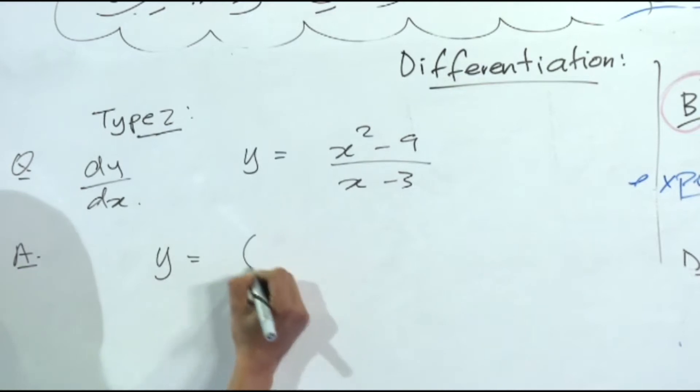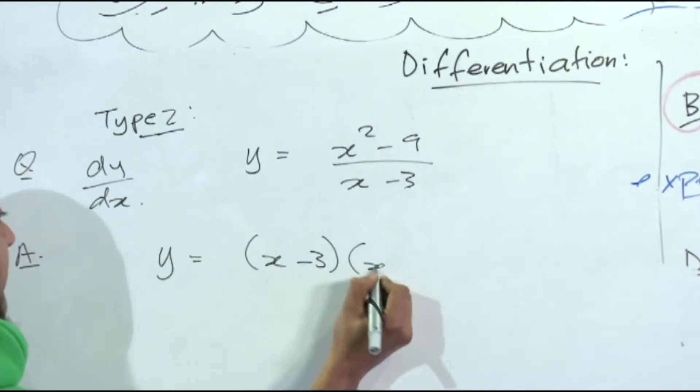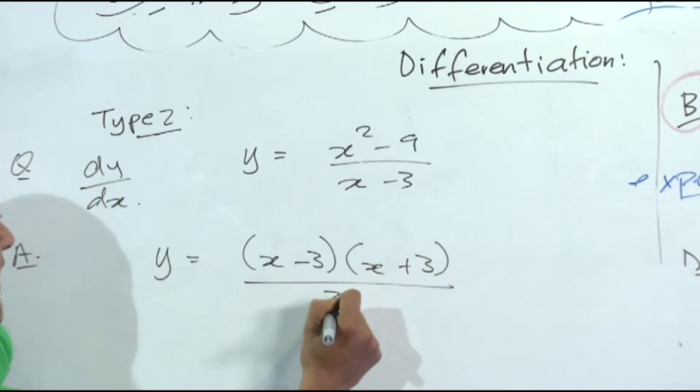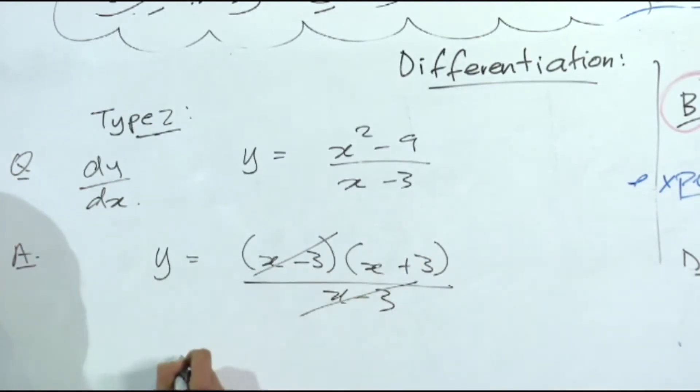I said simplify this first. x squared minus 9 is (x minus 3)(x plus 3), that's the difference of two squares, over x minus 3. x minus 3 cancels. y is equal to x plus 3. Now we do the derivative, this was the before part.